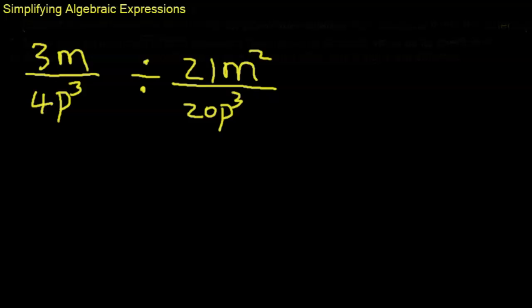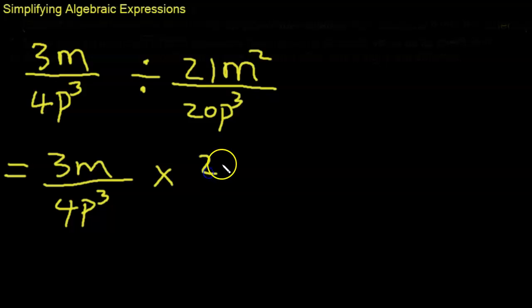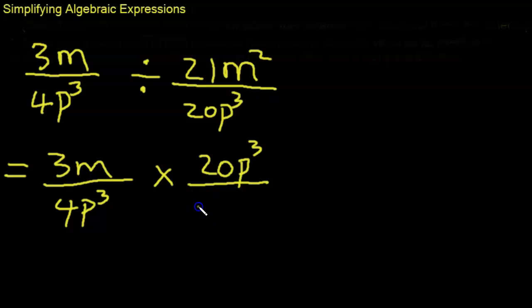Here is another problem: 3m over 4p cubed divided by 21m squared over 20p cubed. This is why I asked you to watch the fractions link for a better understanding. When you divide by a fraction, you multiply and invert — reciprocate everything on the right-hand side. So it becomes 3m over 4p cubed times 20p cubed over 21m squared.